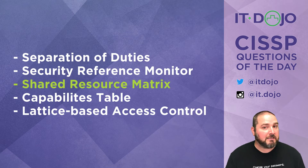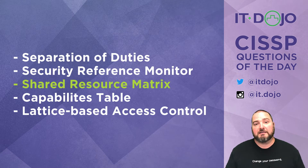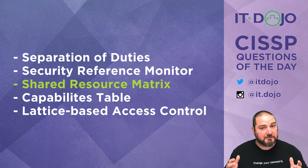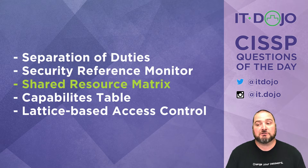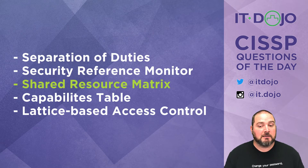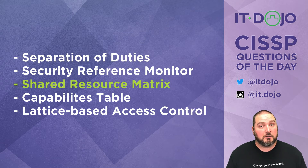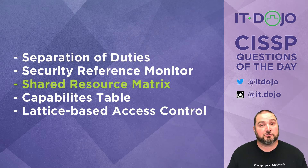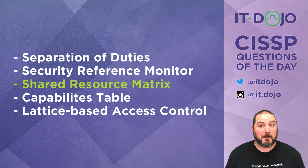It does not mean that one exists. A shared resource matrix does not tell you that there is a covert storage channel — it tells you that there's an opportunity for one. So it gives you insight and guidance on where you should be looking. That's really the whole essence of what a shared resource matrix is all about.